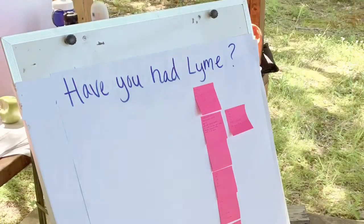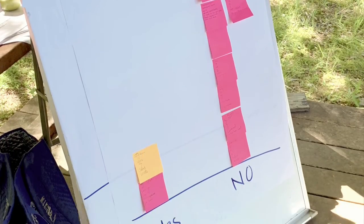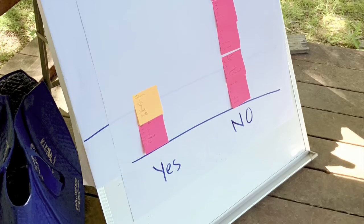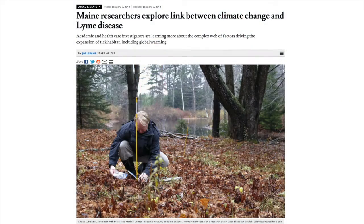In our second module, youth explored data on tick-borne diseases, such as Lyme disease, looking at all 50 states and how it changes over time. They considered how rates of Lyme are increasing and how this might relate to environmental factors like temperature and climate change.